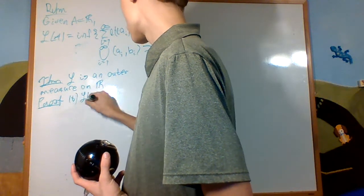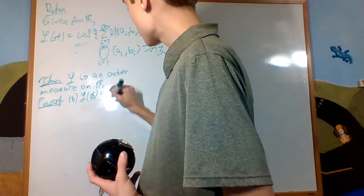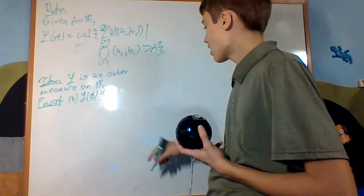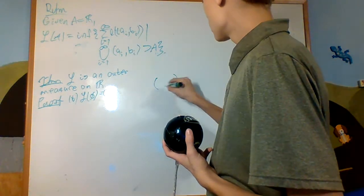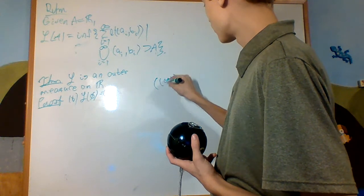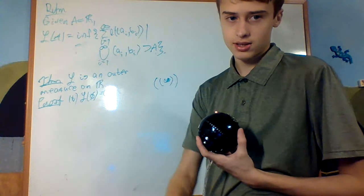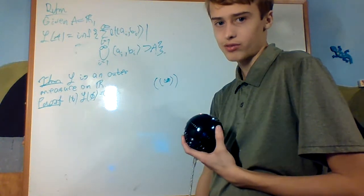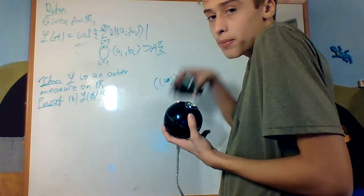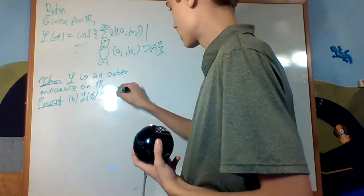The first property is that the Lebesgue measure of the empty set is zero. This is trivial because I could take rapidly decreasing open sets just converging to a point that still cover the empty set. So the lengths can go arbitrarily small, and so we're done. Trivial.